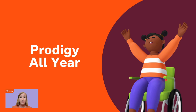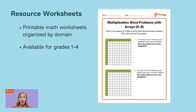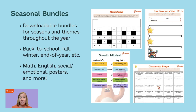Using Prodigy all year is recommended for the best results. To help you use Prodigy all year, both online and off, there's a resource page with downloadable content to make your job easier. There are resource worksheets — printable math worksheets organized by domain, currently available for grades 1 through 4. There are also seasonal bundles — downloadable bundles for seasons and themes throughout the school year, including back to school, fall, winter, and end of year, with math, English, and even social-emotional content. These are things you can use offline to help engage your students using Prodigy materials.